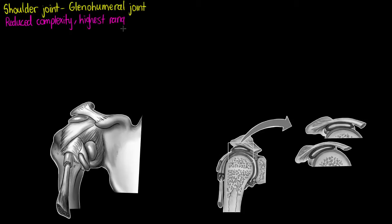The first thing we're going to notice with our shoulder joint is that it has no real socket. The bone surface of the head of the humerus meets with the glenoid fossa of the scapula and sits below the acromion. It interacts with the scapula at the glenoid cavity or glenoid fossa, and below the acromion here.